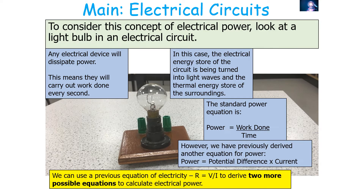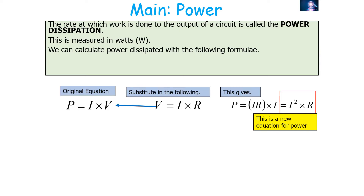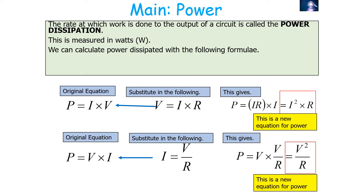Using the resistance equation V = IR, we can derive two more equations for electrical power. Since P = IV and V = IR, we substitute to get P = I·(IR) = I²R. Similarly, since I = V/R, substituting into P = VI gives P = V·(V/R) = V²/R. These are two additional equations for calculating power dissipation.